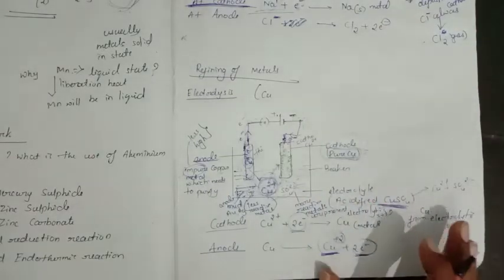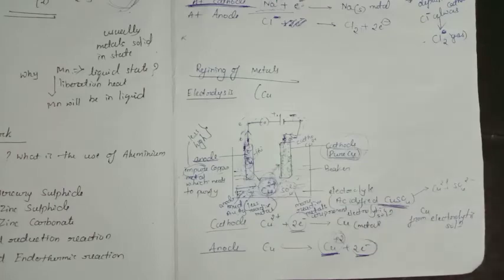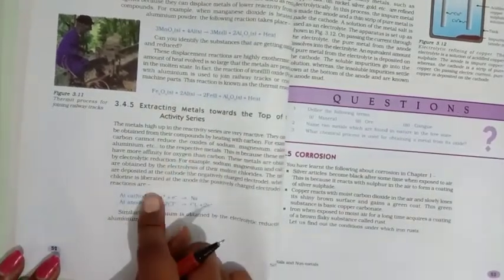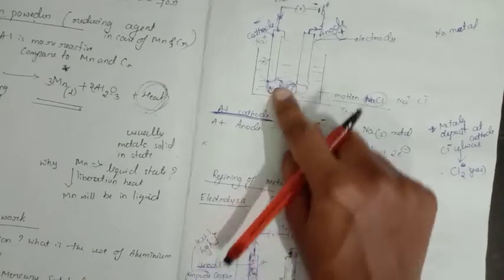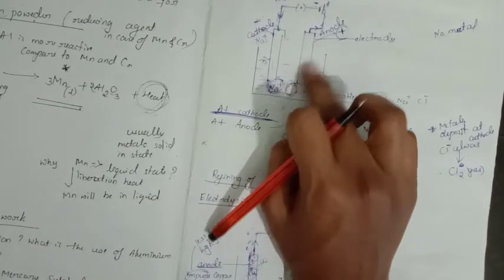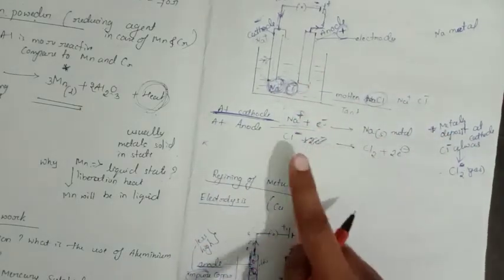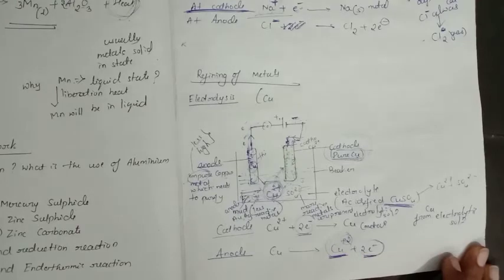Do not confuse the two electrolytic methods: extracting highly reactive metals (using molten NaCl, where Na⁺ moves to cathode and Cl⁻ moves to anode to form Cl₂ gas) versus electrolytic refining of copper (using impure copper as anode, pure copper as cathode, and acidified copper sulfate as electrolyte). In both, metals deposit at the cathode and remember where electrons are added and where they are removed.